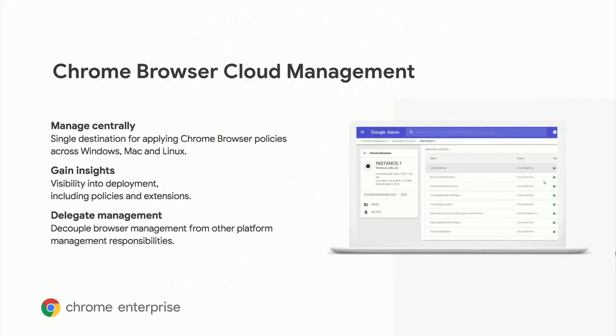To solve these challenges, we released Chrome Browser Cloud Management, which provides an easier way to manage Chrome deployments of any size, centrally from the cloud, across Windows, Mac, and Linux, from the same console where an enterprise can manage other Google services including Chrome OS devices. Your end users do not need Google accounts to receive policies, and there is no need for them to sign into the browser. You can set policies across platforms in one place, and you'll gain deeper insights into your deployment. Administrators can immediately see information about the policies that are set, the current browser versions, which extensions are installed, and more — all in one place.